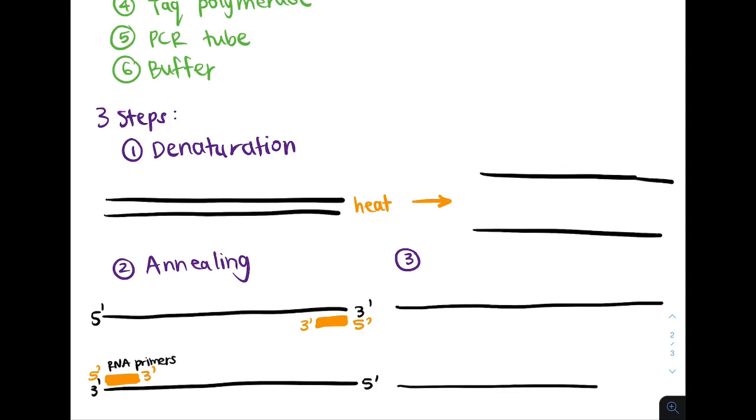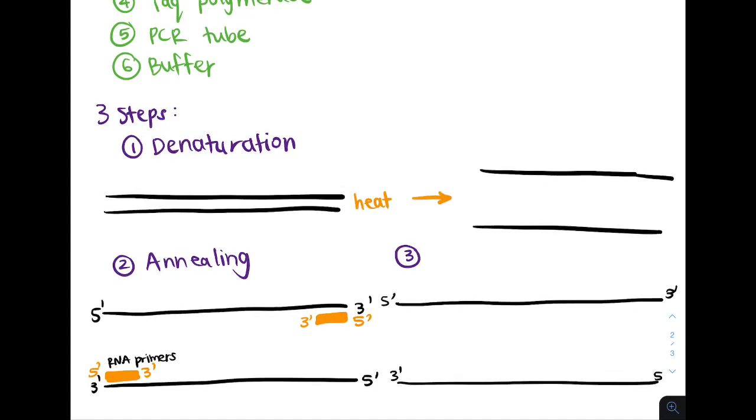And in our third step, called extension, our TAC polymerase will add nucleotides to the three prime end of each primer. So here we have our DNA primers, and TAC polymerase will add or elongate the DNA strand and read the template from three to five, but synthesize from five prime to three prime. We will then repeat this cycle multiple times.